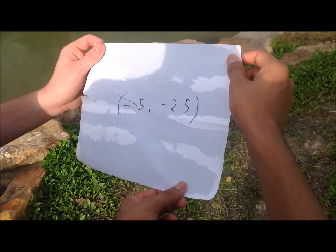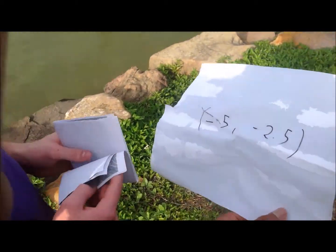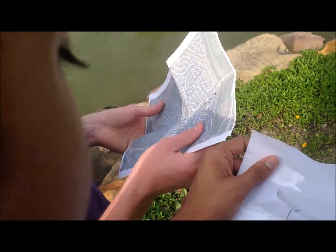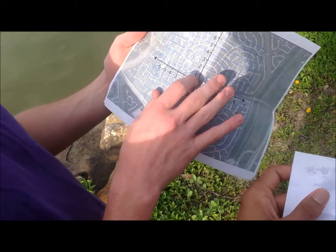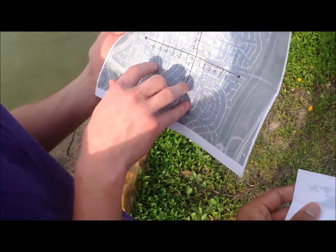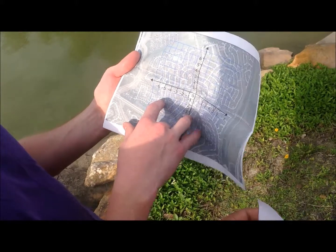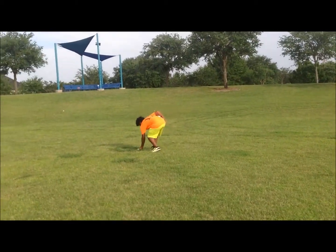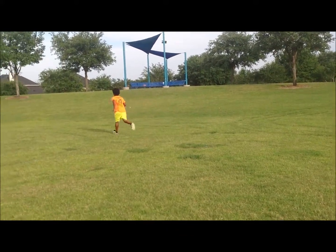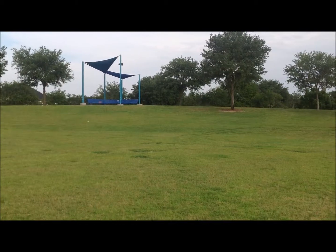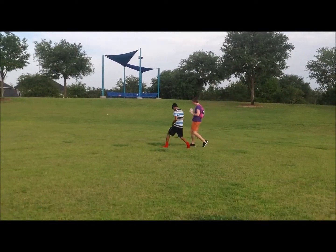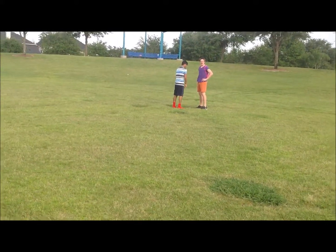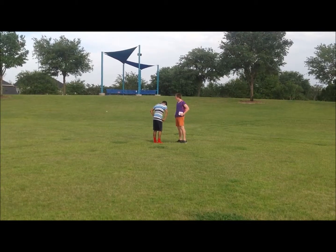Whoa! Negative 5 comma negative 2.5! Well, that must mean it's in the third quadrant, because both the X and the Y value are negative. So let's see: negative 5 to the left, negative 2.5 down — that means we should be in that little green square. Let's go! Here we are: negative 5, negative 2.5. Look at the poorly placed clue. Hit it, Boots.